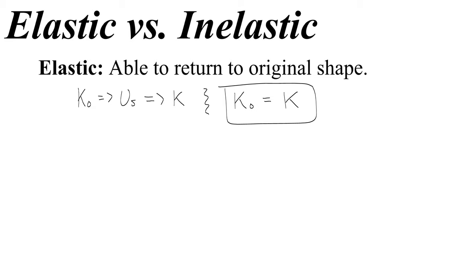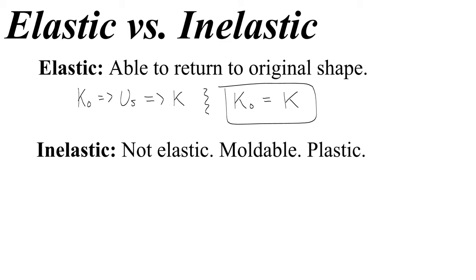The other type of collision is one where kinetic energy is not conserved. This deals with an object that does not return to its original shape. An object that does not return to its original shape is called inelastic, which just means not elastic — something that's moldable, or occasionally we use the word plastic. In this case, there is a spring-like object that is not capable of perfectly returning to its original shape. Let's watch a video of an inelastic collision.